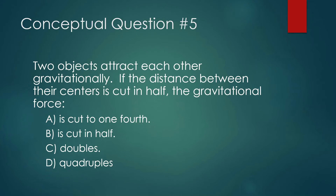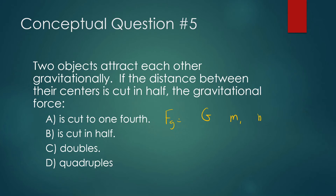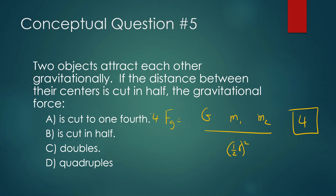Two objects attract each other gravitationally. If the distance between their centers is cut in half, what happens to the gravitational force? Force of gravity equals G × M1 × M2 / R². If the distance is cut in half, R becomes R/2, so R² changes by a factor of 1/4, meaning this side changes by a factor of 4. Since R is squared, cutting the distance in half causes the gravitational force to quadruple — getting stronger.